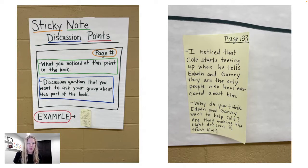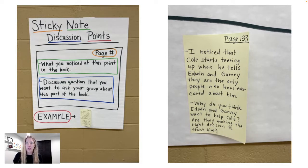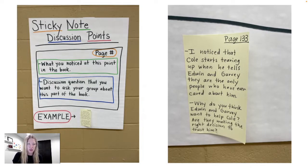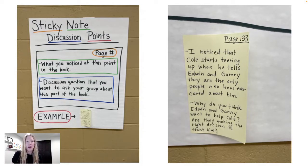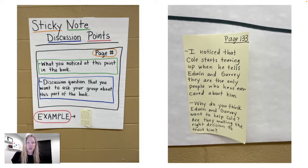I have an example from Touching Spirit Bear: page 133. I noticed that Cole starts tearing up when he tells Edwin and Garvey they are the only people who have ever cared about him. My discussion question is: why do you think Edwin and Garvey want to help Cole? Are they making the right decision to trust him? So you can see: page number, what I noticed, and a discussion question. We want to teach and model this using your interactive read-aloud text — have students evaluate whether a sample sticky note is a good discussion point and why.